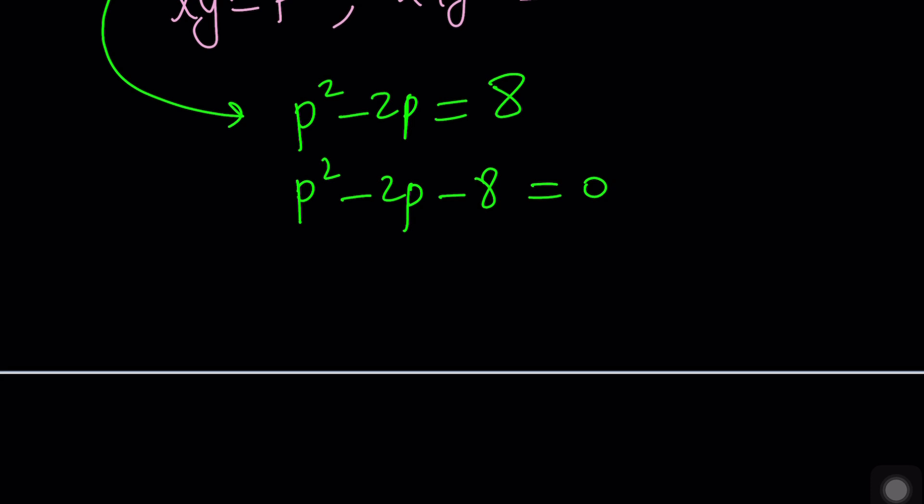And now we can factor this into P minus 4 times P plus 2. Hopefully, you know how to do this trick. Equals 0. You just find two numbers whose product is negative 8, whose sum is negative 2. And now you go from there. From here, we get P equals 4 or P equals negative 2.